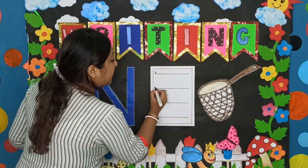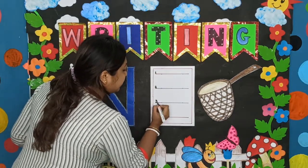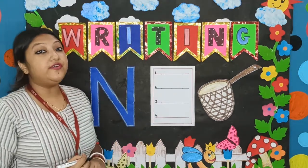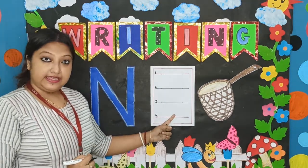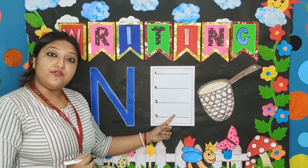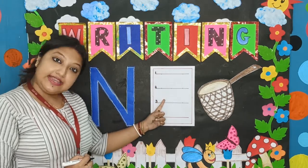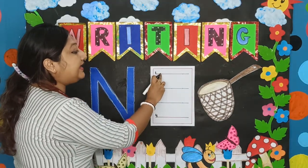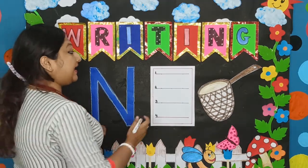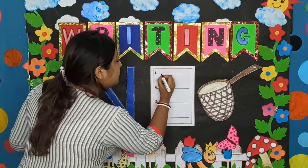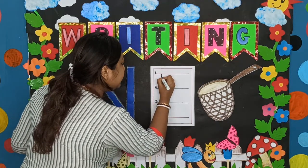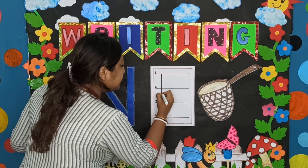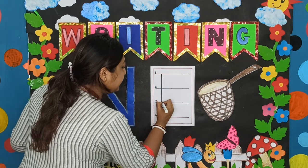So these are our four lines. But we will never write on the fourth line. We will only write within the first three lines. Okay, now from the first line, I will draw a standing line.